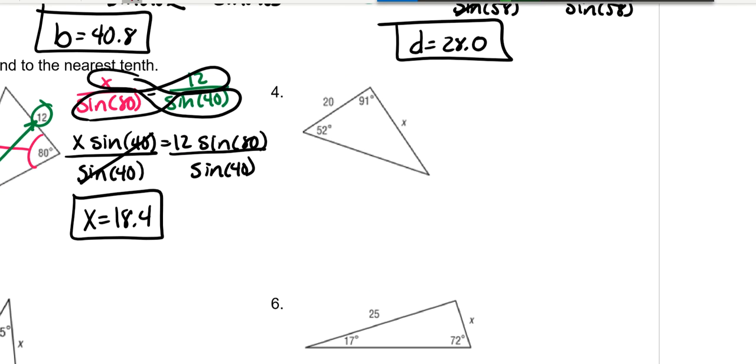So right over here, 52 goes with our X. So sine of 52. And then the X goes on top.